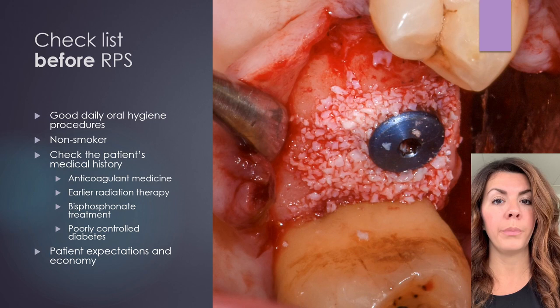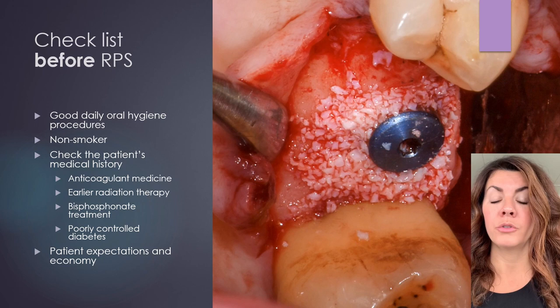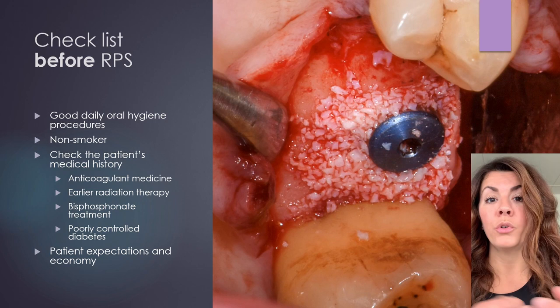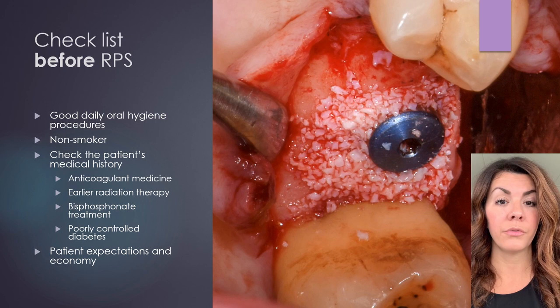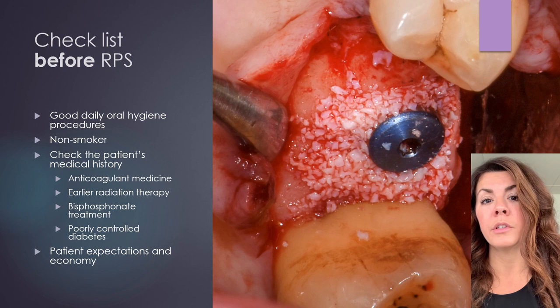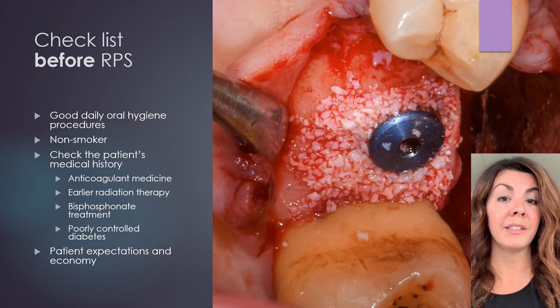Heavy bleeding will make it more difficult to see what you're doing and to place the material and membrane correctly. In the worst case, the material will move and that will affect the result. I would not perform this type of surgery on patients who have undergone earlier radiation therapy, intravenous bisphosphonate treatment, or have poorly controlled diabetes. It's important to talk to your patient before surgery so that they have realistic expectations and are aware of the additional costs.